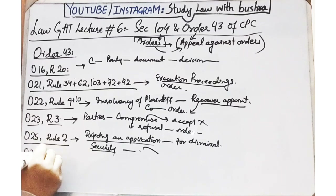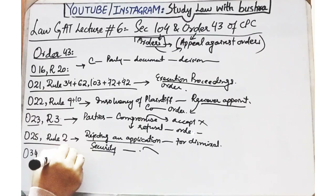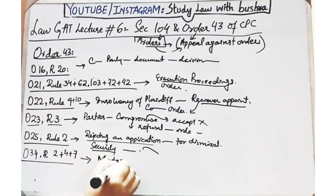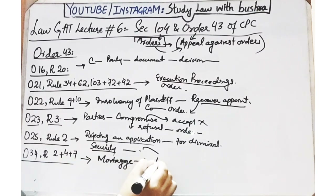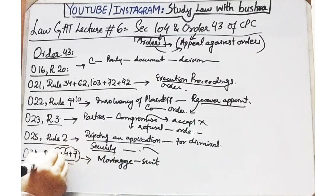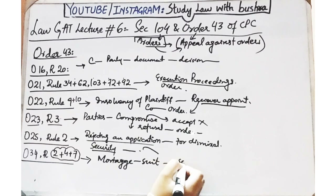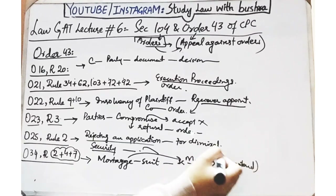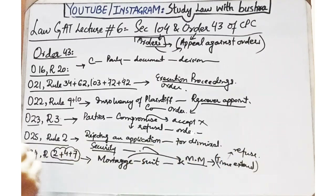Order 34 Rules 2, 4 aur 7 - Order 34 basically mortgage ke saath deal kar raha hai, mortgage money ke saath. Mortgage ke case mein court aap se yeh demand karti hai ke aapne mortgage money court mein submit karni hai, aur aap court se time maang rahe ho ke kuch time extend kar diya jae for the submission of the mortgage money, aur court refuse kar deti hai extension of time ko, to aisi surat mein court ke is order ko bhi challenge kiya ja sakta hai - yeh order bhi appealable hai.